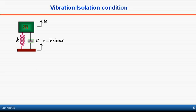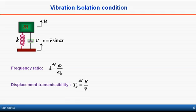In this system, the ratio of excitation frequency to the natural frequency of the system is called the frequency ratio lambda. The ratio of steady-state displacement magnitude of the mass M to the magnitude of a sinusoidal displacement of the base is called the displacement transmissibility.